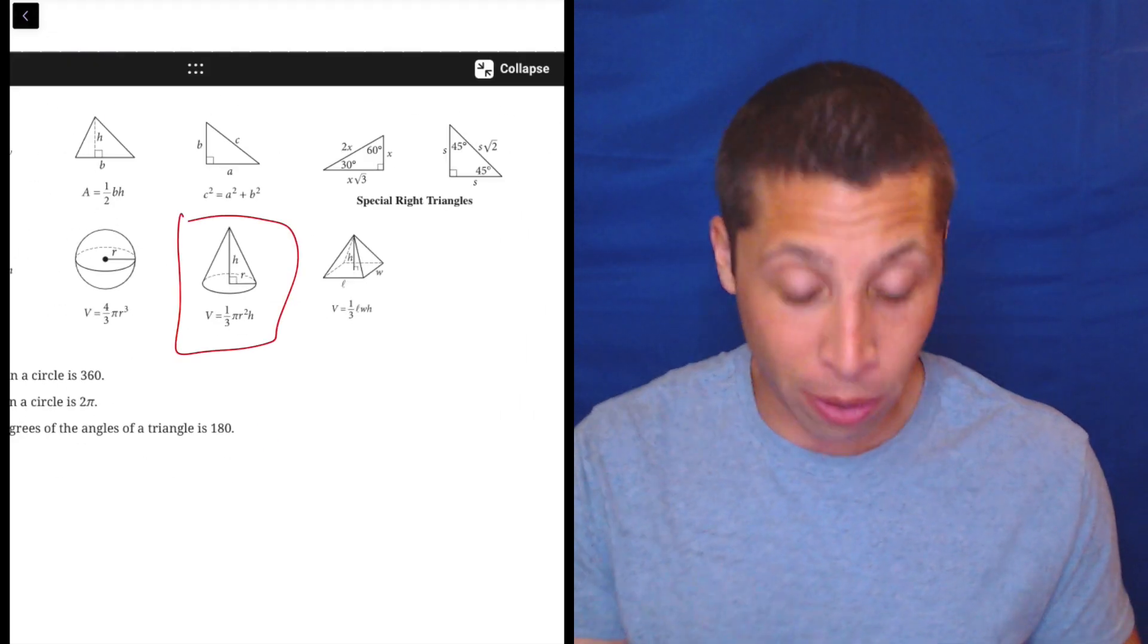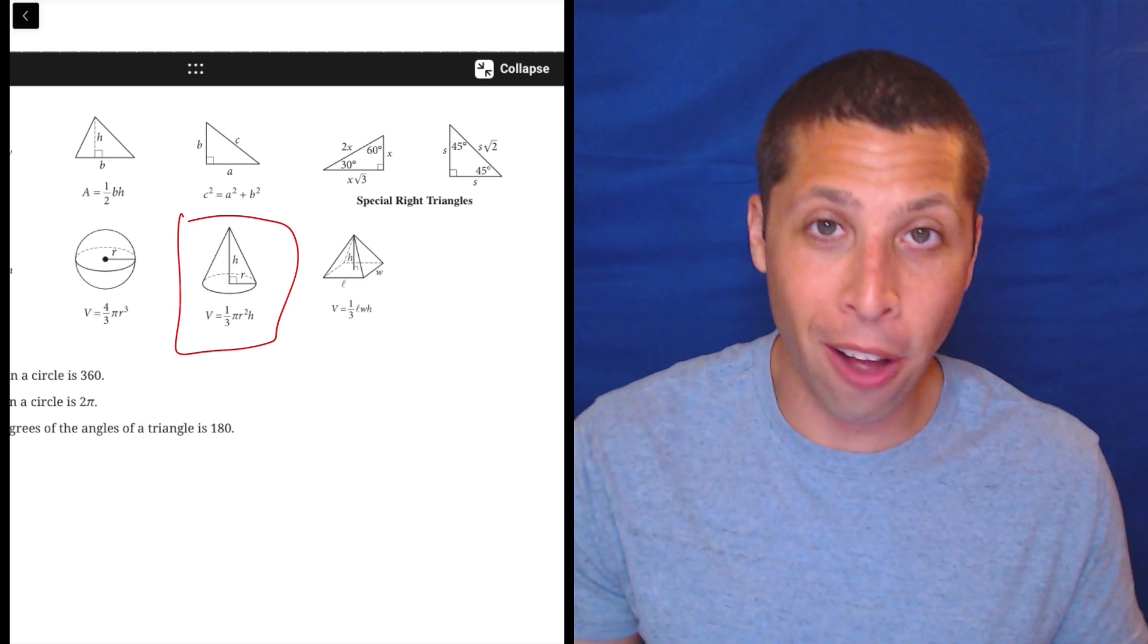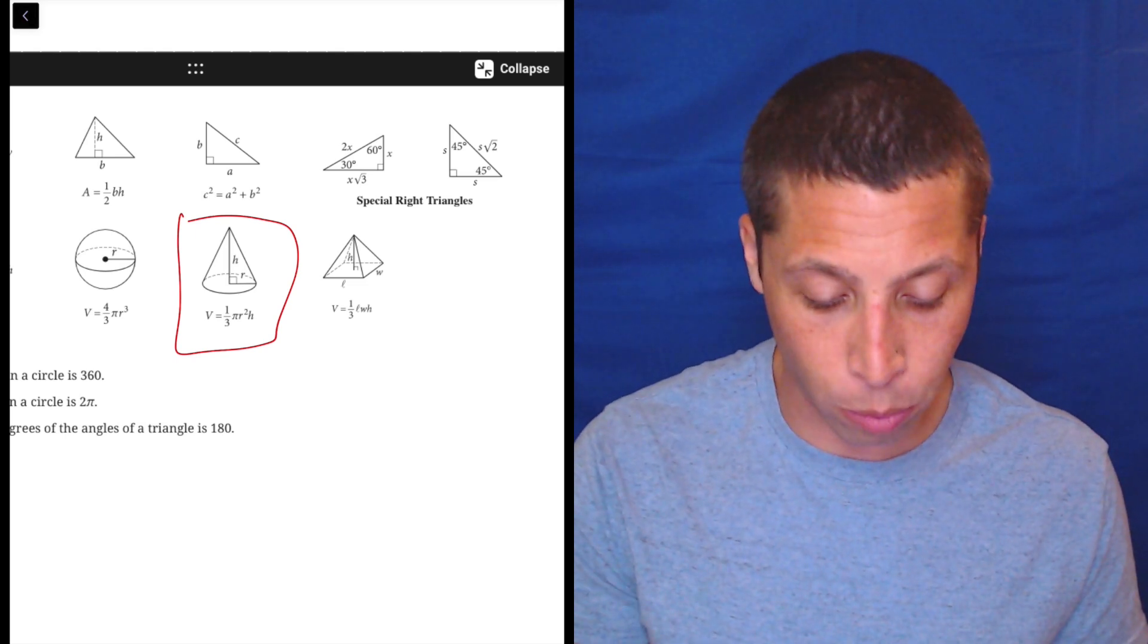And so there you go. It also has all the dimensions on the shape for us. So volume is one third pi r squared h.